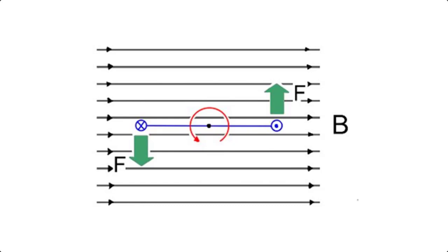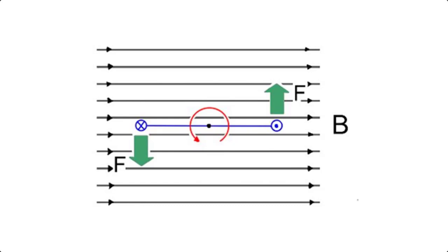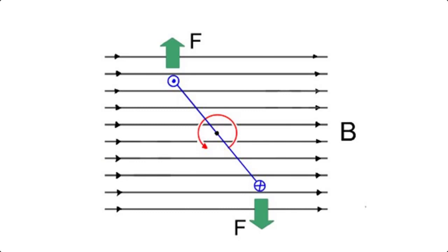If a current carrying loop is initially parallel to the magnetic field, it will rotate until it is perpendicular to the magnetic field. At this point, the momentum of the loop will mean that it continues to rotate past right angles to the magnetic field for some distance.